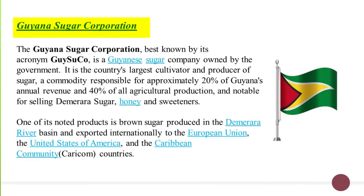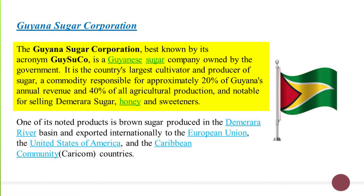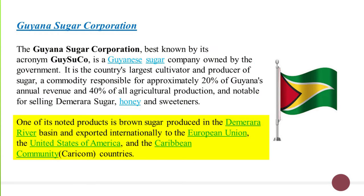The Guyana Sugar Cooperation, best known by its acronym GUYSUCO, is a Guyanese sugar company owned by the government. It is the country's largest cultivator and producer of sugar, a commodity responsible for approximately 20% of Guyana's annual revenue and 40% of all agricultural production, and notable for selling Demerara sugar, honey, and sweeteners. One of its noted products is brown sugar, produced in the Demerara River Basin and exported internationally to the European Union, the United States of America, and the Caribbean Community, also known as CARICOM.